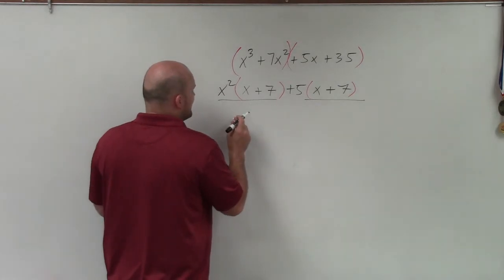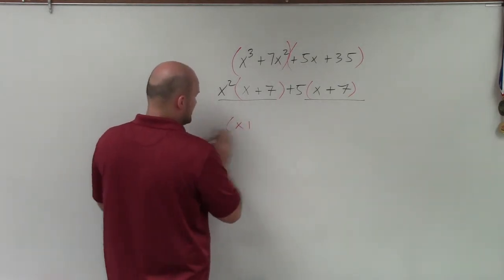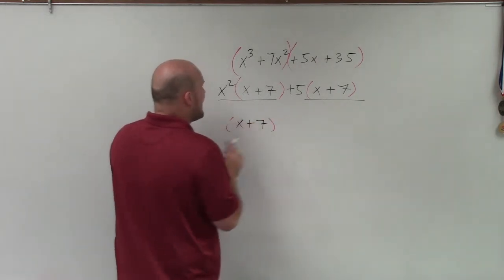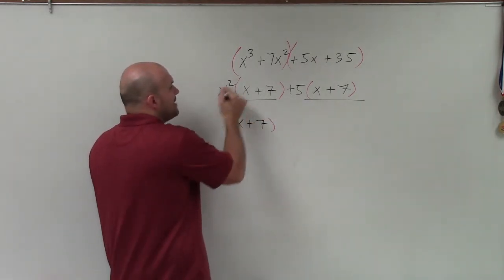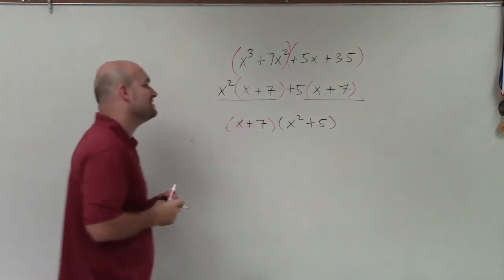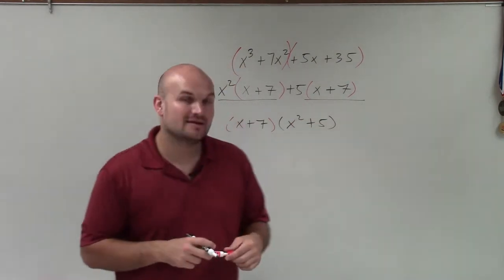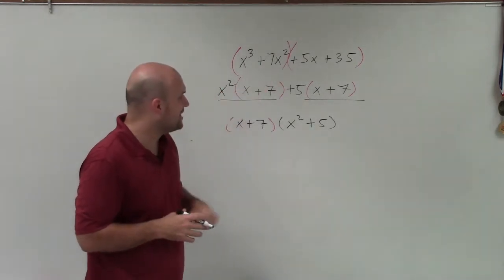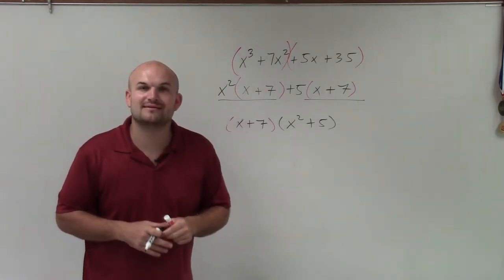And when I factor out the expression x plus 7, I'm just left with x squared plus 5. But then, ladies and gentlemen, I have now successfully factored a polynomial with four terms by grouping. Thanks.